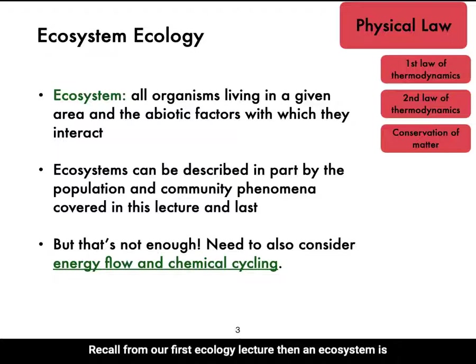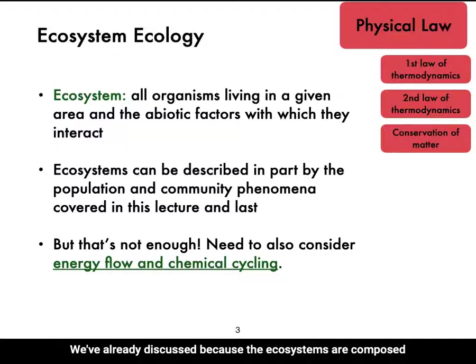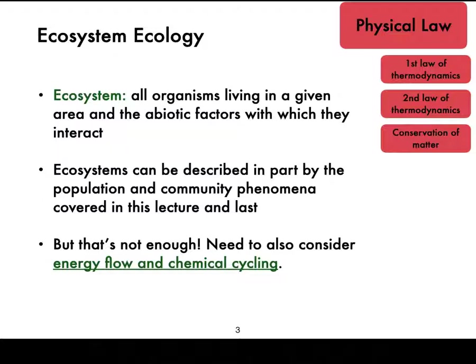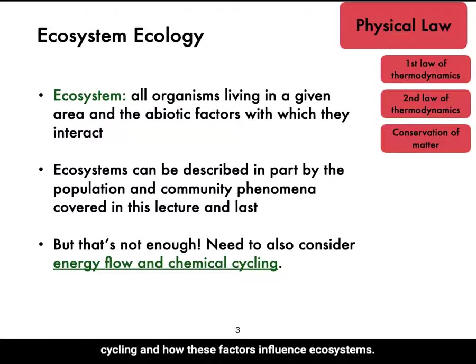Recall from our first ecology lecture that an ecosystem is all organisms living in a given area and the abiotic factors with which they interact. Ecosystems can be described in part by the population and community phenomena we've already discussed, because ecosystems are composed of populations and communities plus the abiotic factors. However, because of this key addition of abiotic factors, ecosystem ecologists also need to consider energy flow and chemical cycling and how these factors influence ecosystems.